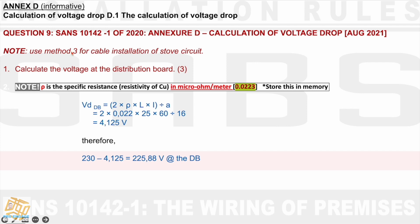The note to use method 3 for cable installation of the stove circuit is important. For question 9.1, calculate the voltage at the DB — we use a different formula here. Because we need to find the size of the cable, which is A, we use this formula. The information given allows you to use a certain formula. Sometimes there's too little information and you can only use one formula; in other cases you can use two or three different formulas and get a similar answer. In this case they are specifically referring to A, so you pick up experience as to when to use which formula.